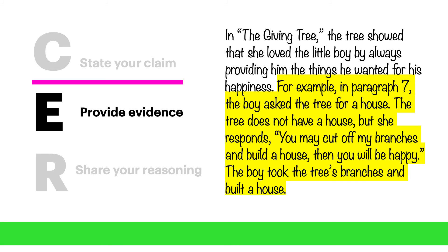Here's how this could look in our example. For example, in paragraph 7, the boy asked the tree for a house. The tree does not have a house, but she responds, 'You may cut off my branches and build a house, then you will be happy.' The boy took the tree's branches and built a house. You can see there that I took an exact example from the story and included it to support my claim.